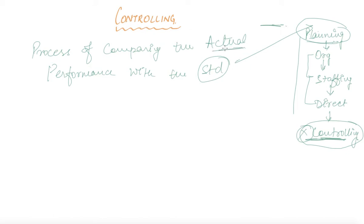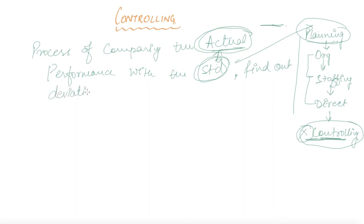At the controlling stage, you are required to compare the actual with the standard, because your main aim — for which you started working — was the standard, and whatever you have achieved is your actual result. Only after evaluating both of these will you be able to find out the deviation, that is, the gap between actual and standard.